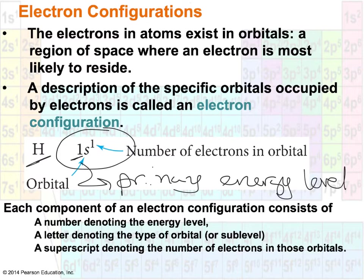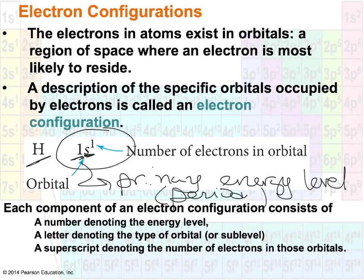That primary energy level also represents the period on the periodic table. So energy level one is representative of electrons placed in the first energy level — the first row of the periodic table. After the number comes the type of orbital the electron is in: either S, P, D, or F. Finally, the exponent represents the number of electrons in that particular orbital or sublevel.